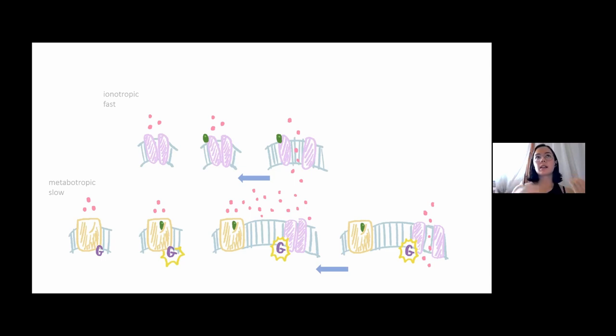As we know, this electrical potential inside the cell governs whether this neuron is going to fire an action potential. Because of that, these receptors are key modulators of the firing rate of the cell.